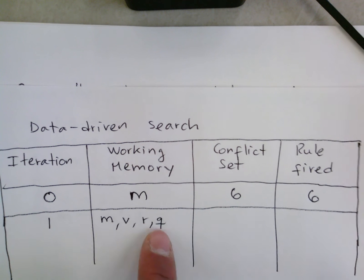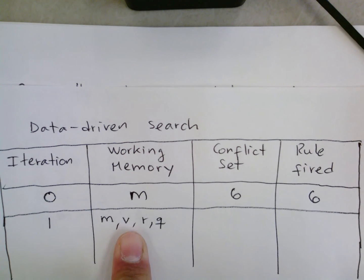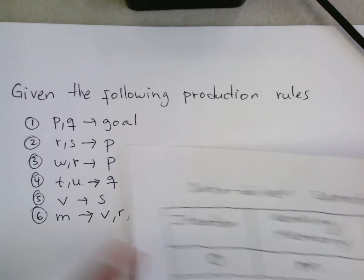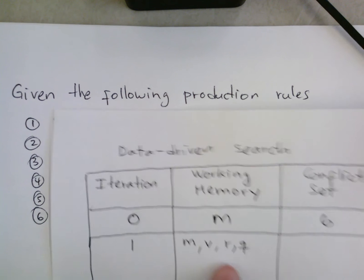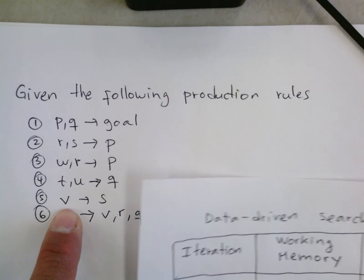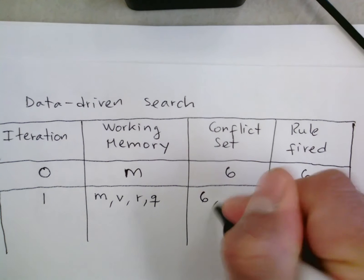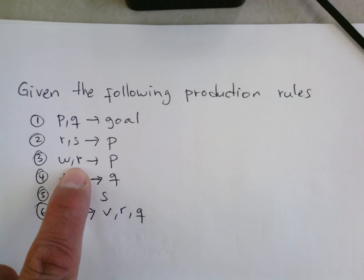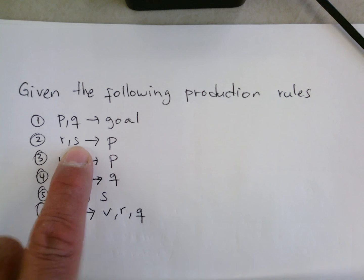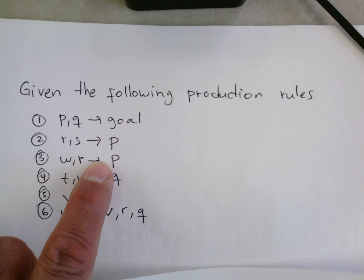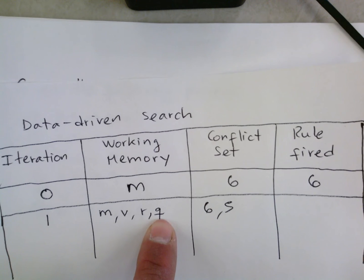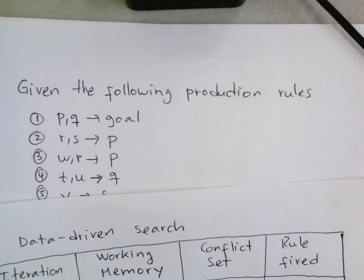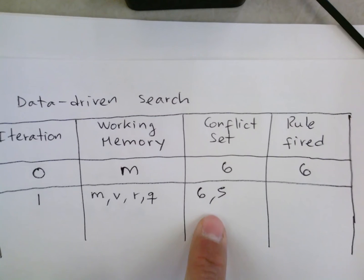Now we have M plus those three new facts — four facts total — and we look for matches in the rules. M matches rule six, and V matches rule five, so we have six and five in the conflict set. We also have R and Q, but there is no Q in working memory. R needs either S to get P, or W to add P. Since there is no Q, nothing else is added. As soon as we reach the goal we halt.